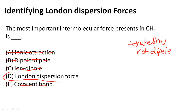So D is actually the answer — the dispersion force. The dispersion force has to do with polarizability, specifically how easy it is for the electrons distributed in an atom or molecule to be disrupted. Here in CH₄, it's much less likely to be polarized.